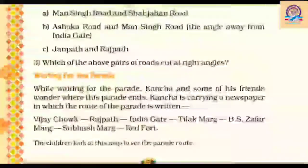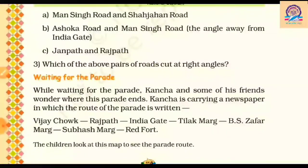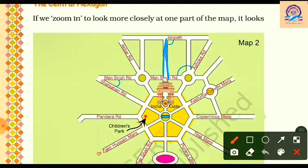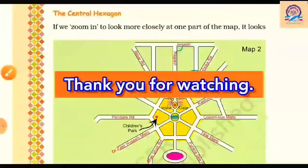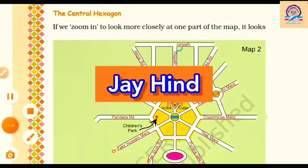The last question is: which of the above pairs of roads cut at a right angle? The answer is the second pair — Janpath Road and Rajpath Road. With this we have completed Part 1 of Chapter 8. I hope you have understood it and now you are able to read any map of a given area.